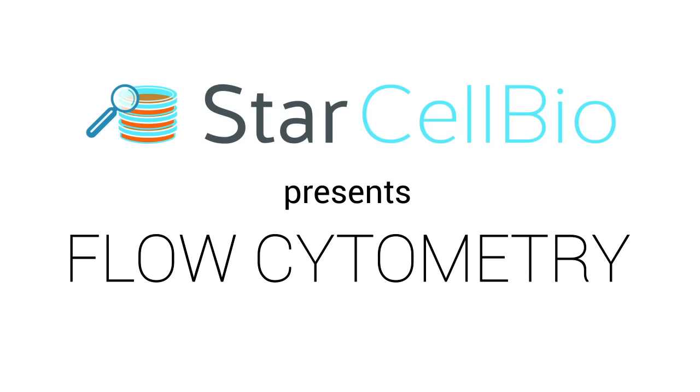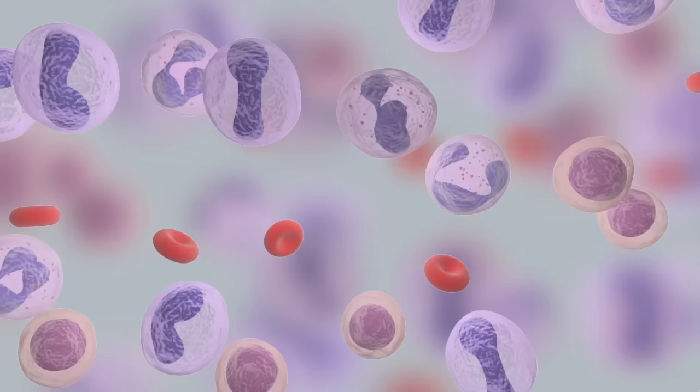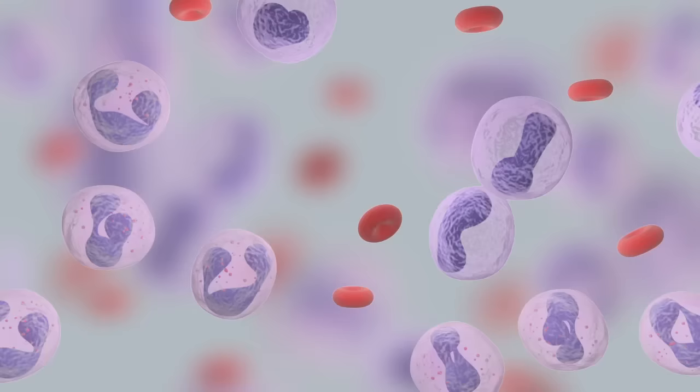In this animation, we will introduce you to the flow cytometry experimental technique. Flow cytometry is used to count and analyze the size, shape, and properties of individual cells within a heterogeneous population of cells.